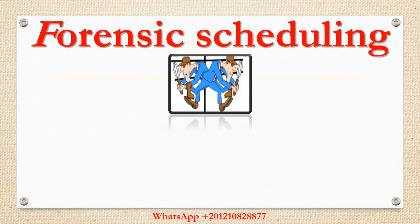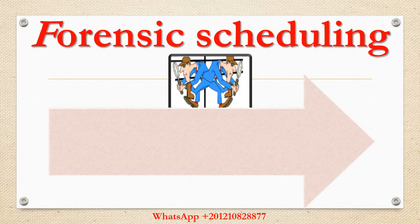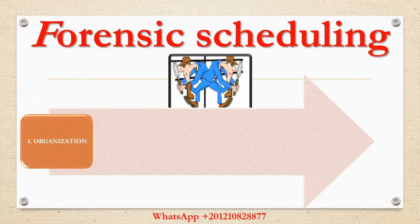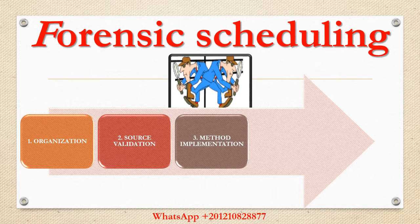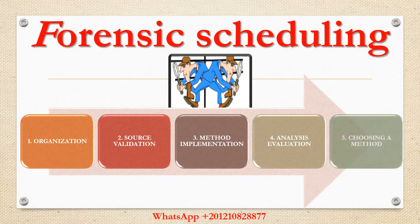Forensic scheduling analysis passes through five main stations: first, the organization of analysis techniques; second, the validation of data sources; third, how to implement each method of analysis; fourth, the analysis evaluation; and fifth, how to choose the convenient method for the case of study.